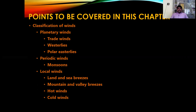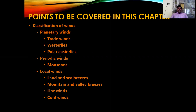They are the classification of winds. In that we focus on the planetary winds, the periodic winds, and the local winds. As part of planetary winds, we focus on the trade winds, westerlies, and polar easterlies. As part of periodic winds, we will learn about the monsoon winds. For local winds, we will discuss land and sea breezes, mountain and valley breezes, hot winds, and boats.